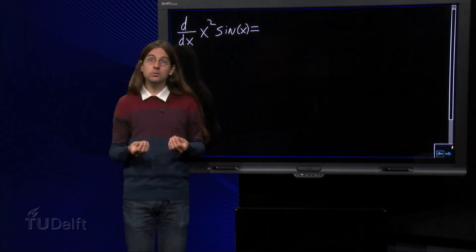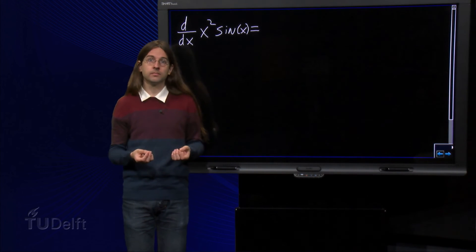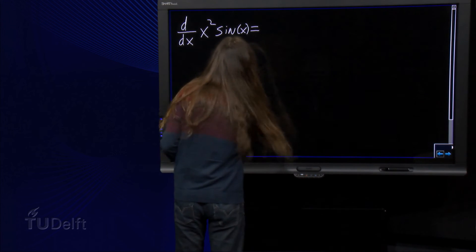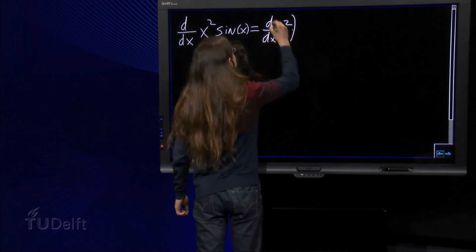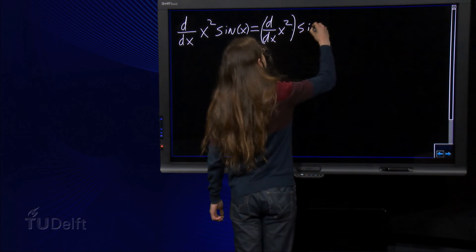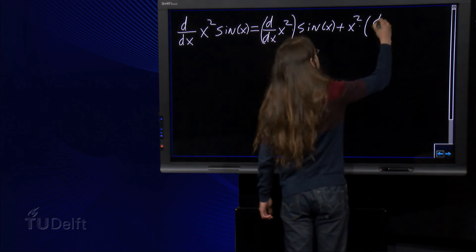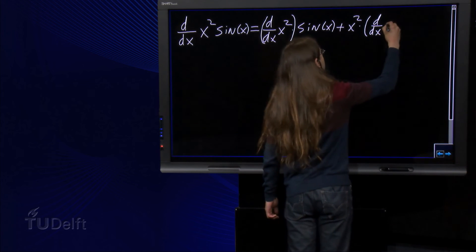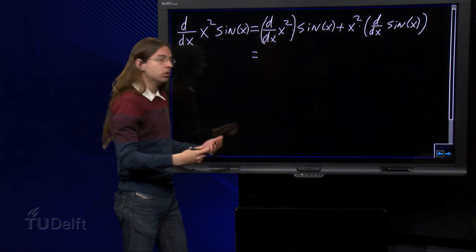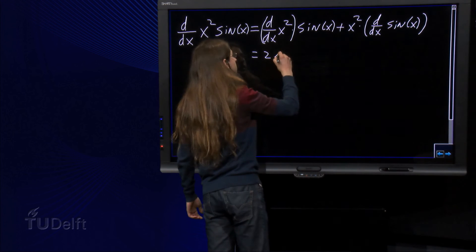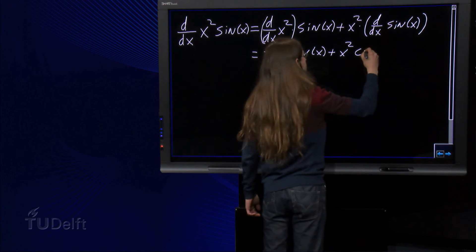As an example of how to use this rule, we now calculate the derivative of x squared times sine of x. This equals the derivative of x squared times sine of x plus x squared times the derivative of sine of x, which is equal to 2x sine of x plus x squared times cosine of x.